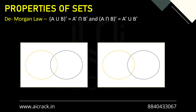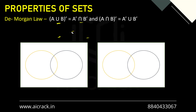Now let's talk about De Morgan's law. There is no analogy with numbers in this case because it is specifically for sets. It states that the complement of (A union B) equals A complement intersection B complement. Similarly, the complement of (A intersection B) equals A complement union B complement — the operator changes when the complement is distributed. You can also apply this in reverse. Both directions are possible.